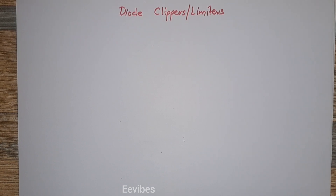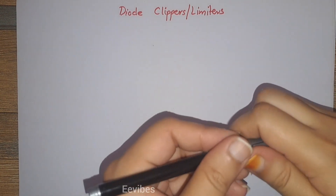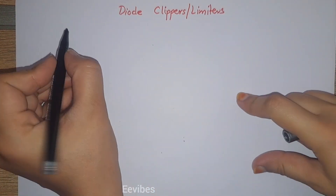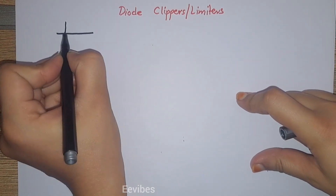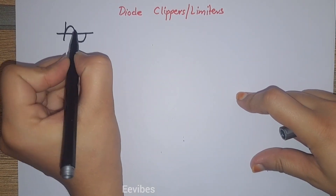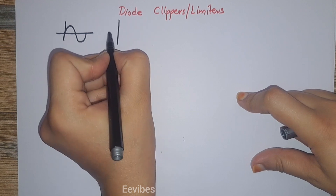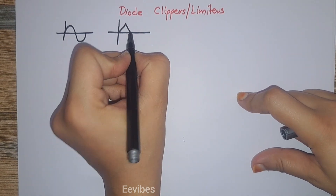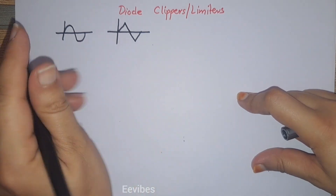Hi guys, this is Asma Mishtak from the W Vibes. In this video lecture you will learn what are the diode clippers or the limiter circuits. Basically, diode limiters or clipper circuits are types of circuits that are used for removing a certain portion of the input waveforms. What is the purpose of removing a certain portion of the input waveforms?